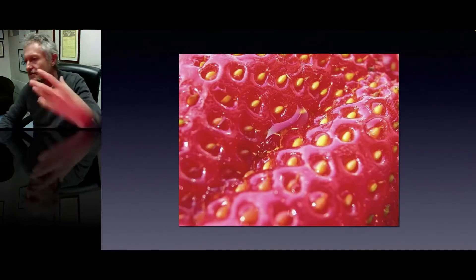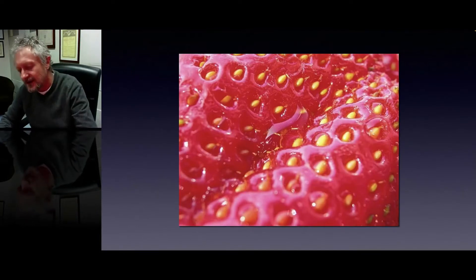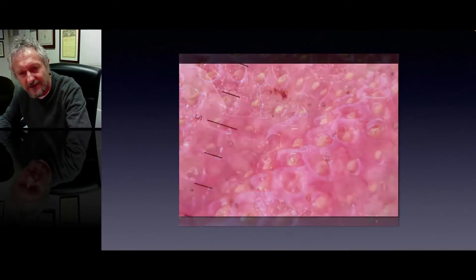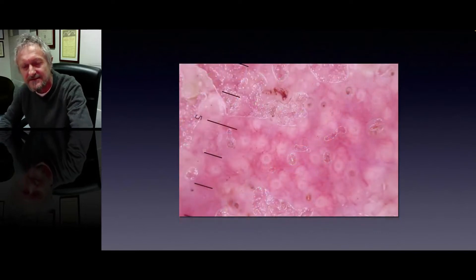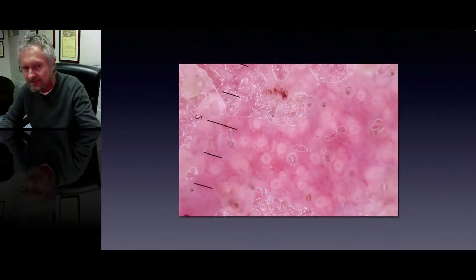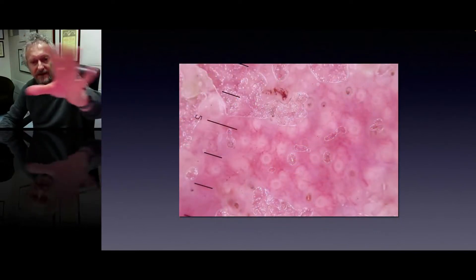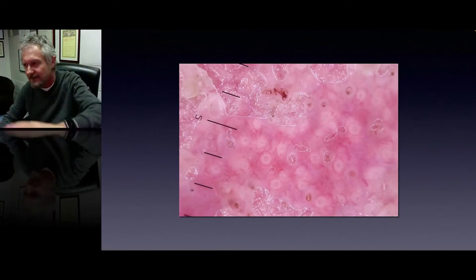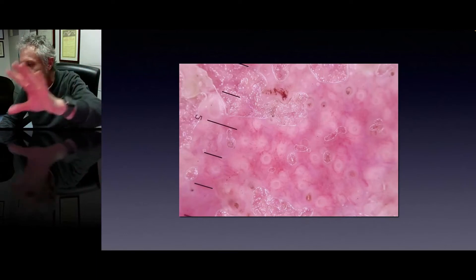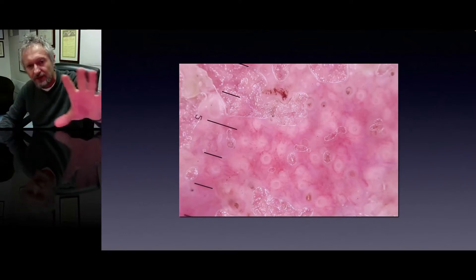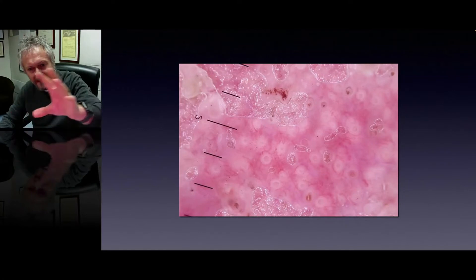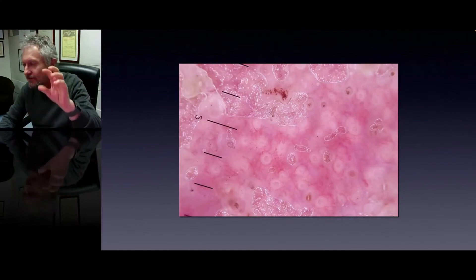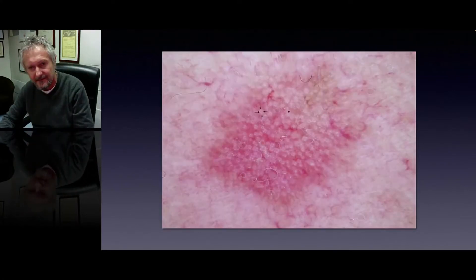The most obvious morphology in dermoscopy of actinic keratosis is the presence of the strawberry pattern, typified by this reticular red pseudo-network with reticular vessels and white follicles in the center.